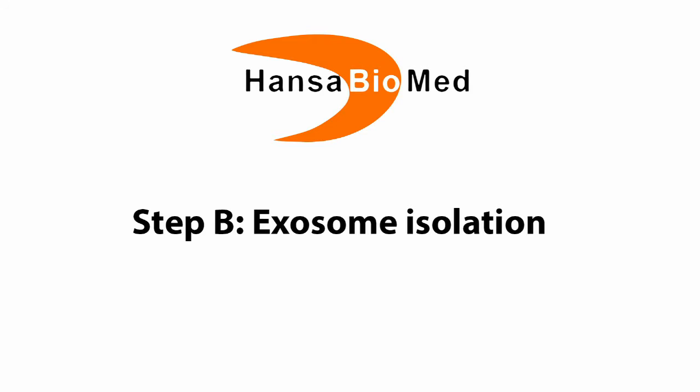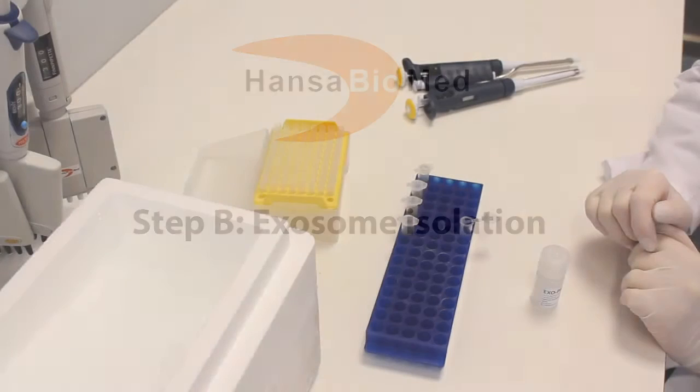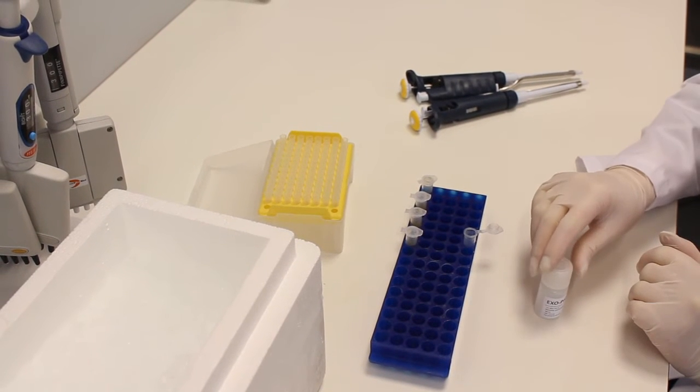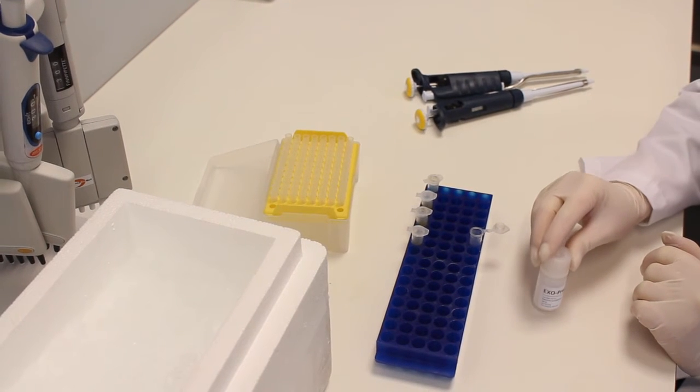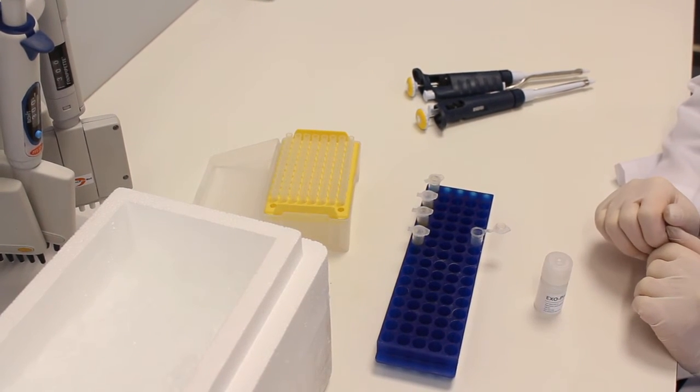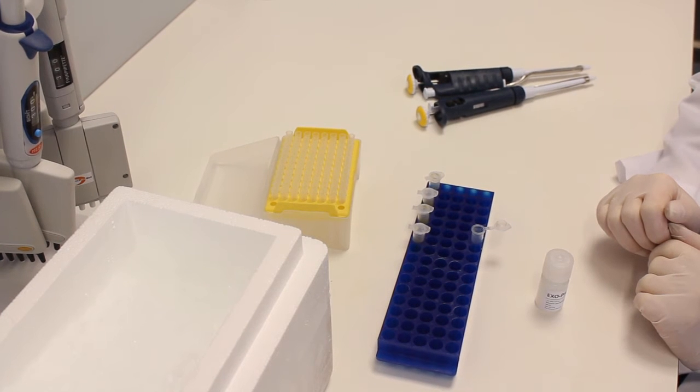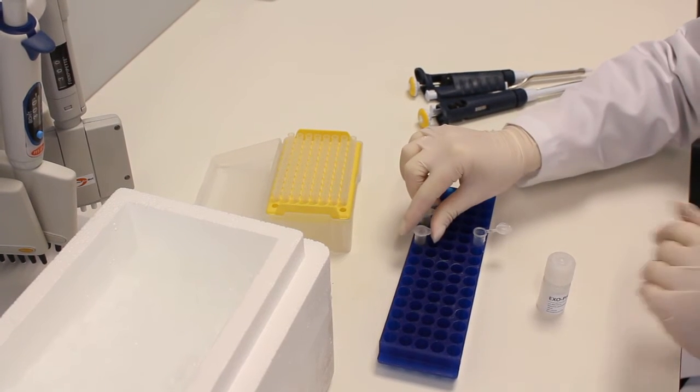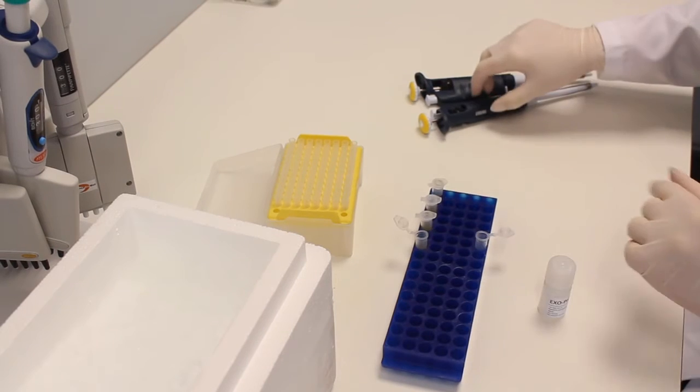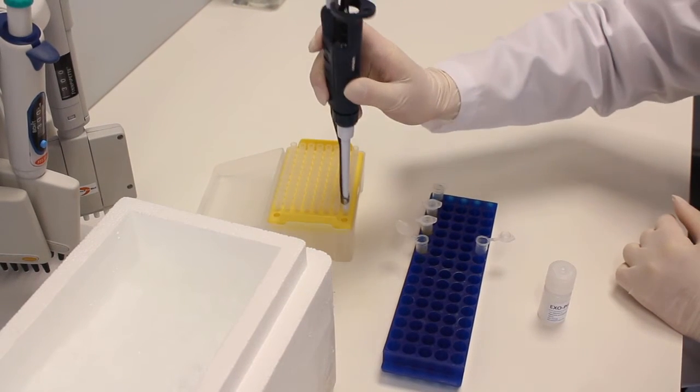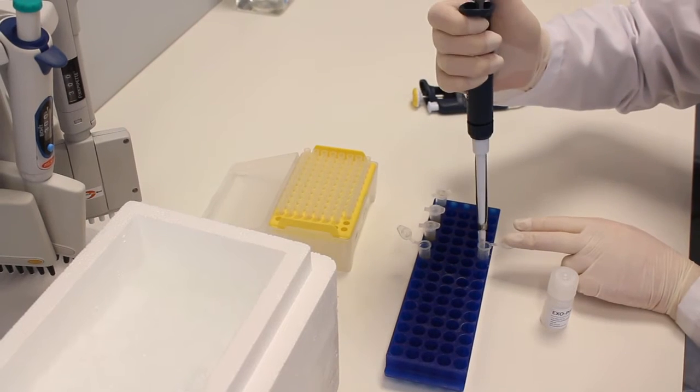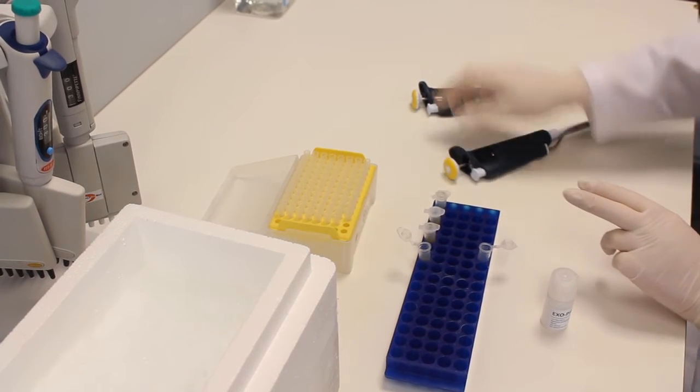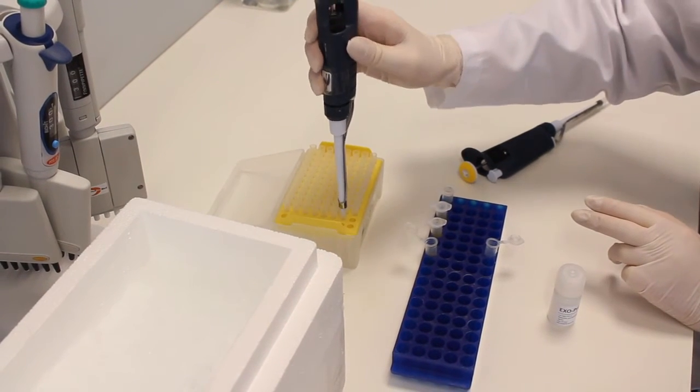Step B: Exosome isolation. Add Exoprep solution to your sample in ratio 1 to 4. It is recommended to use 100 microliters of plasma per one isolation. It means that we take 100 microliters of plasma and add 25 microliters of Exoprep solution.